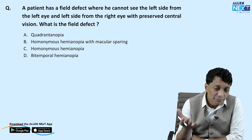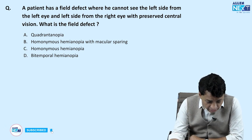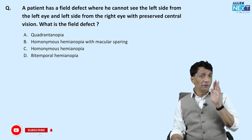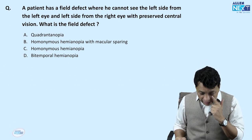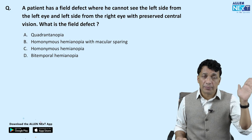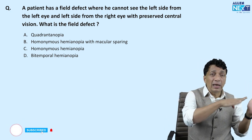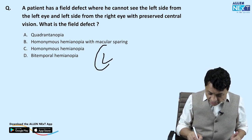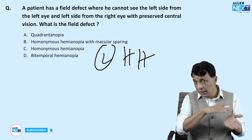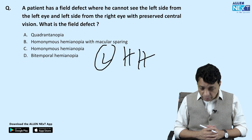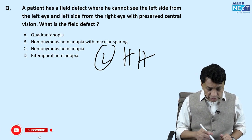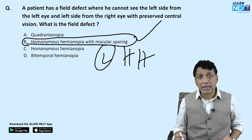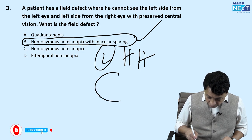Next: a patient cannot see the left side from the left eye and the left side from the right eye, with preserved central vision. Both left fields are gone — this is left-sided homonymous hemianopia. Homonymous because both are on the left side, hemianopia because half the visual field is affected. The preserved central vision makes this homonymous hemianopia with macular sparing.